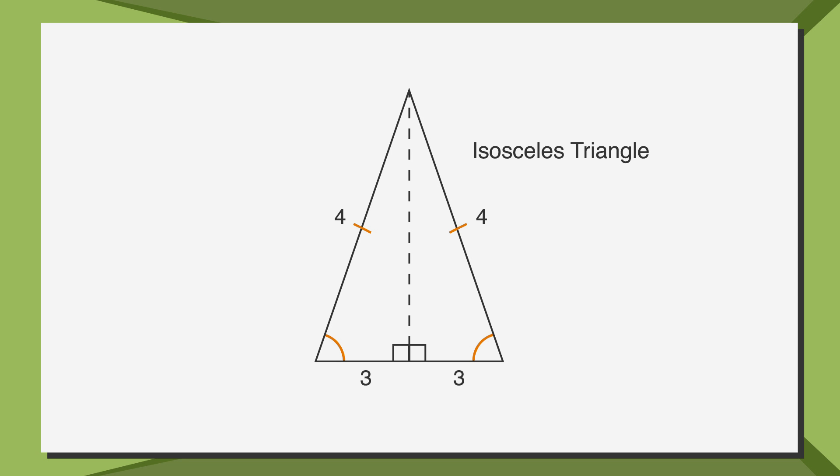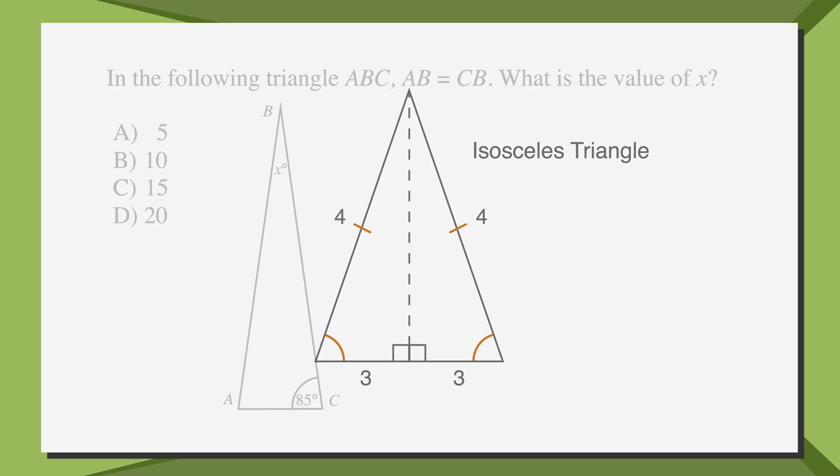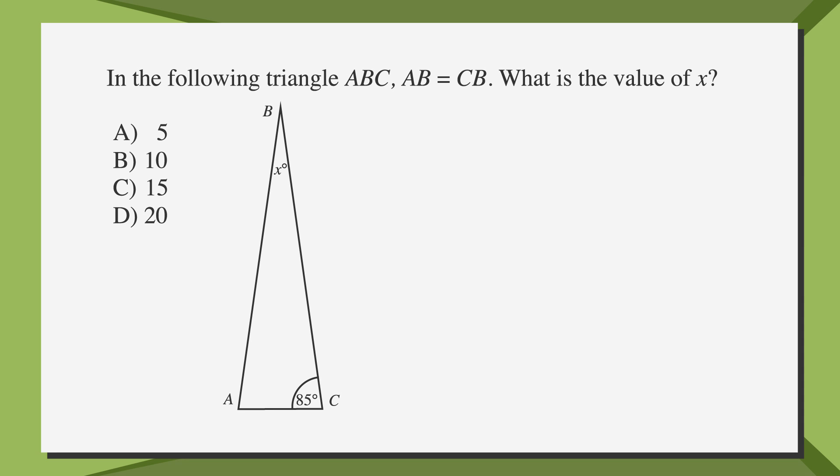Let's look at how we can use this information to solve a problem. In the following triangle ABC, AB is equal to CB. What is the value of X? The answer choices are a, 5, b, 10, c, 15, and d, 20.